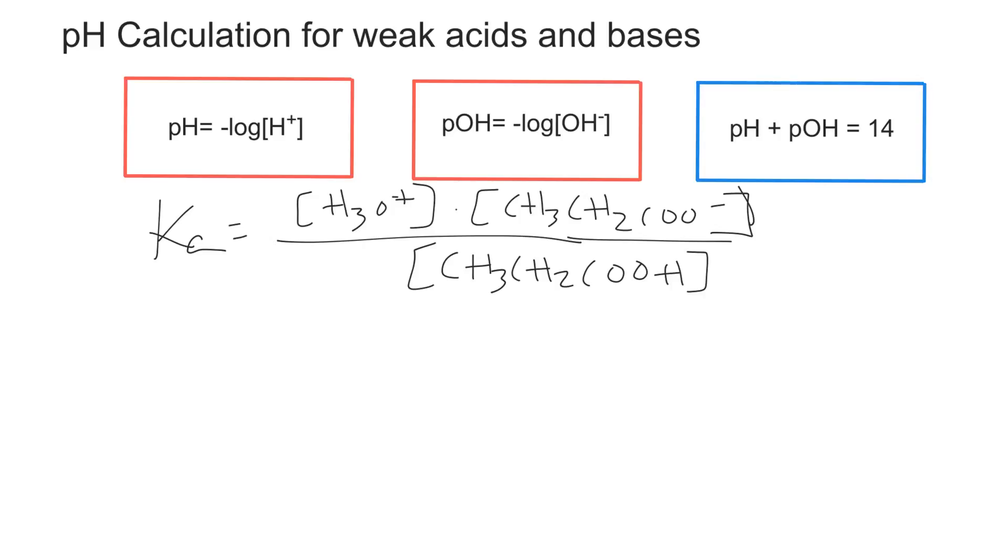And I mentioned before that the Ka is equal to 1.34 times 10 to the negative 5. So we can plug that in here. And then we plug in the values that we got from the ICE table. We know that the concentration of hydronium is equal to X, same as the concentration of propanoate. So that would be X squared. And the concentration of propanoic acid is 0.1 molar minus X.